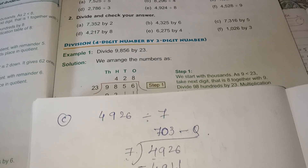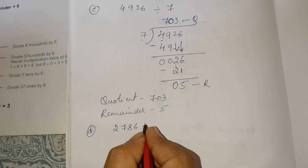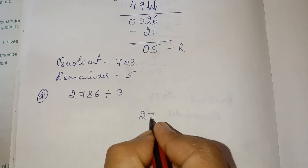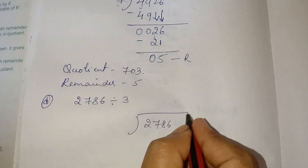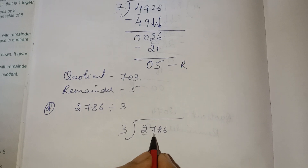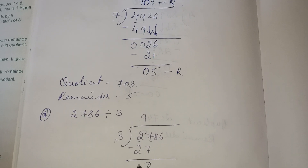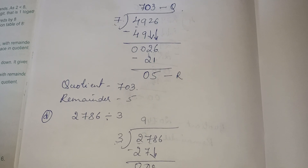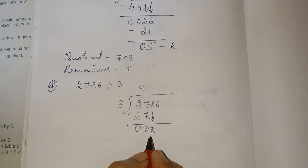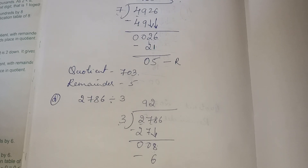Move on to the fourth one: 2786 divided by 3. Write it down. I have to take 2 digits. 3 nines are 27. Subtract, then take the next number down. Now I have 8: 3 twos are 6. I will get a 2 remainder.